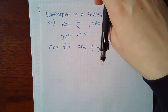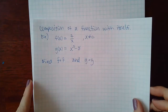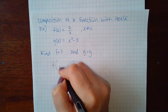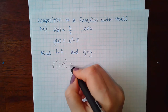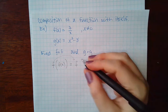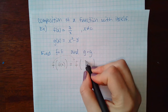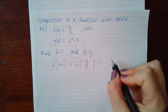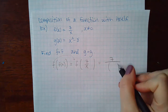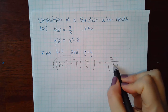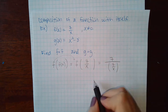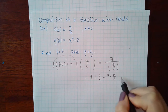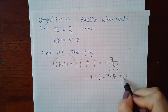Here we compose a function with itself. For f(f(x)): f(x) = 7/x. Write f with a blank inside, then plug in 7/x. That gives 7 divided by (7/x), which equals 7 times (x/7) = x. So f(f(x)) = x — a coincidence in this case.